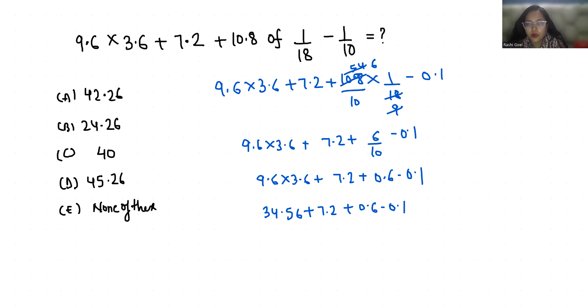So 34.56, 7.2 and 0.6 we are going to add. 5 plus 2 is 7, 6 plus 5 plus 2 is 13, carry over 1, 7 plus 4 is 11, plus 1 is 12. 42.36 minus 0.1 is 42.26.